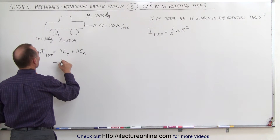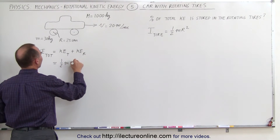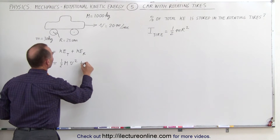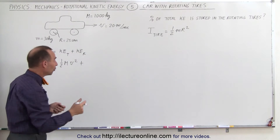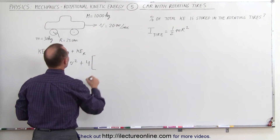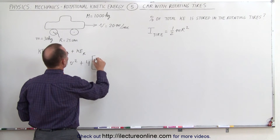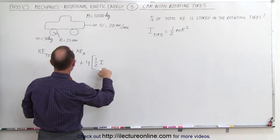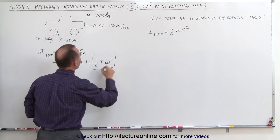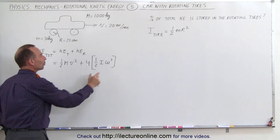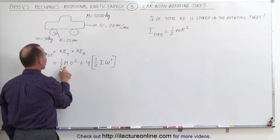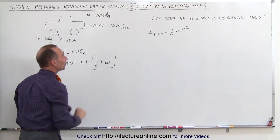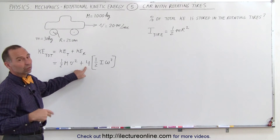For the translational kinetic energy, that would be one half M v squared, using big M for the mass of the car. Plus, since there are four tires, we multiply by four times the rotational kinetic energy of each tire, which is one half I omega squared. So the rotational equivalent uses one half I omega squared, times four because there are four tires.